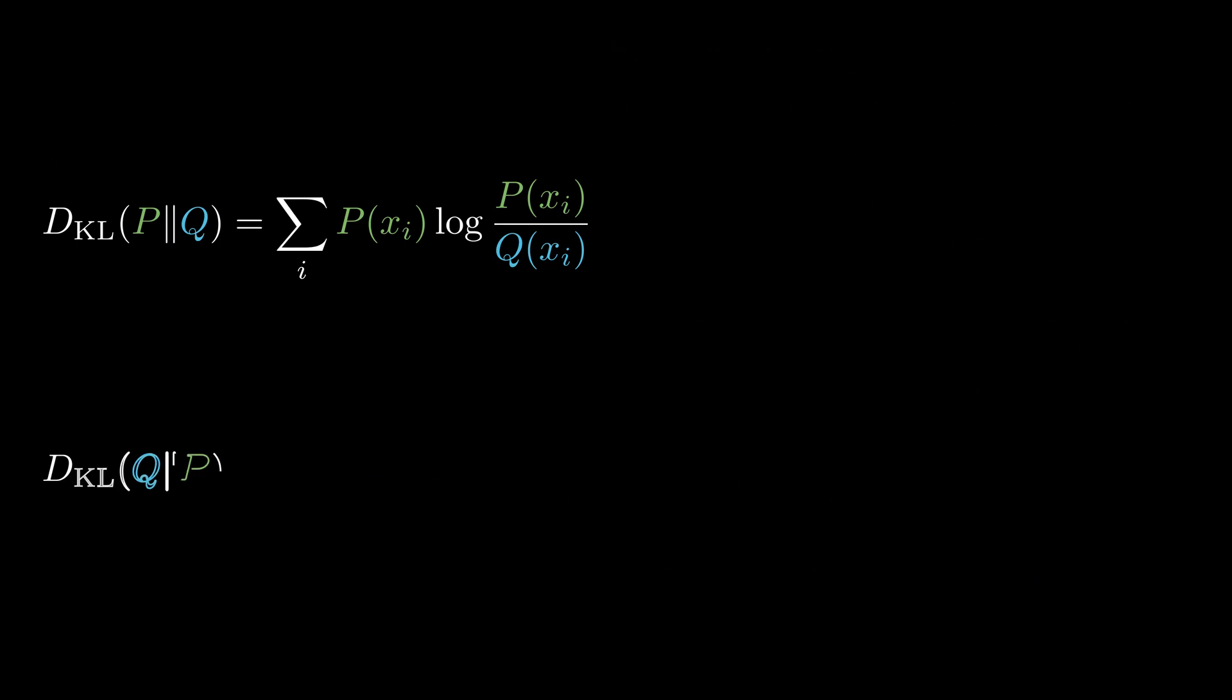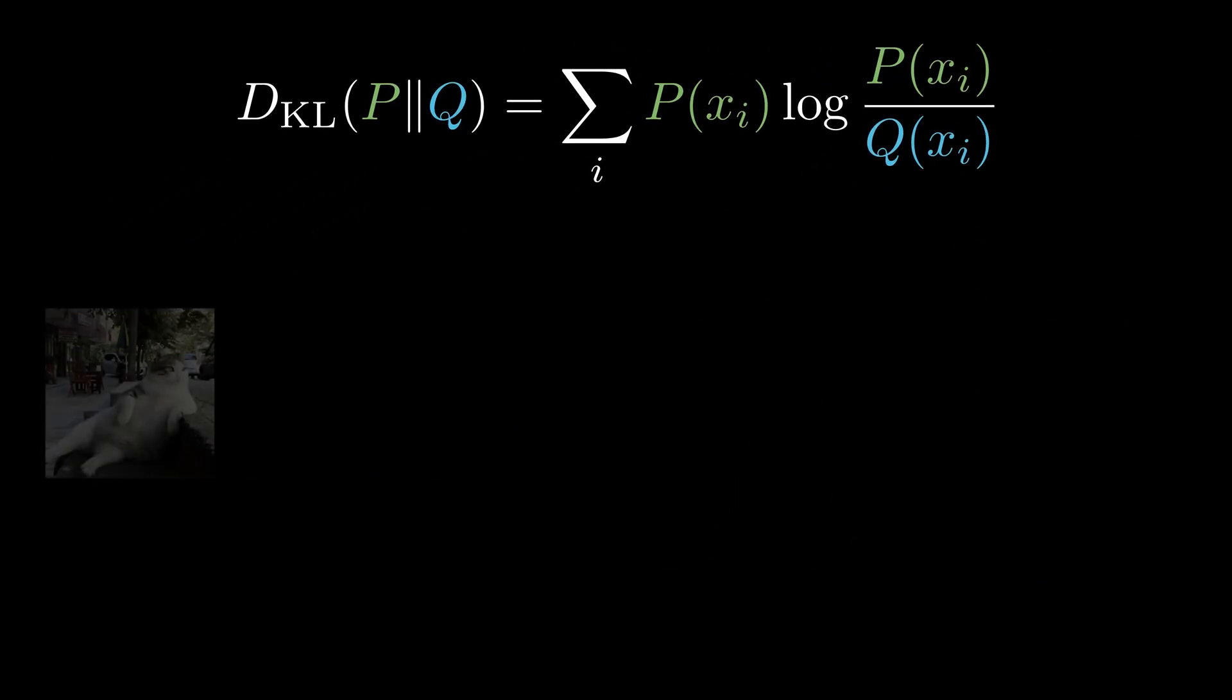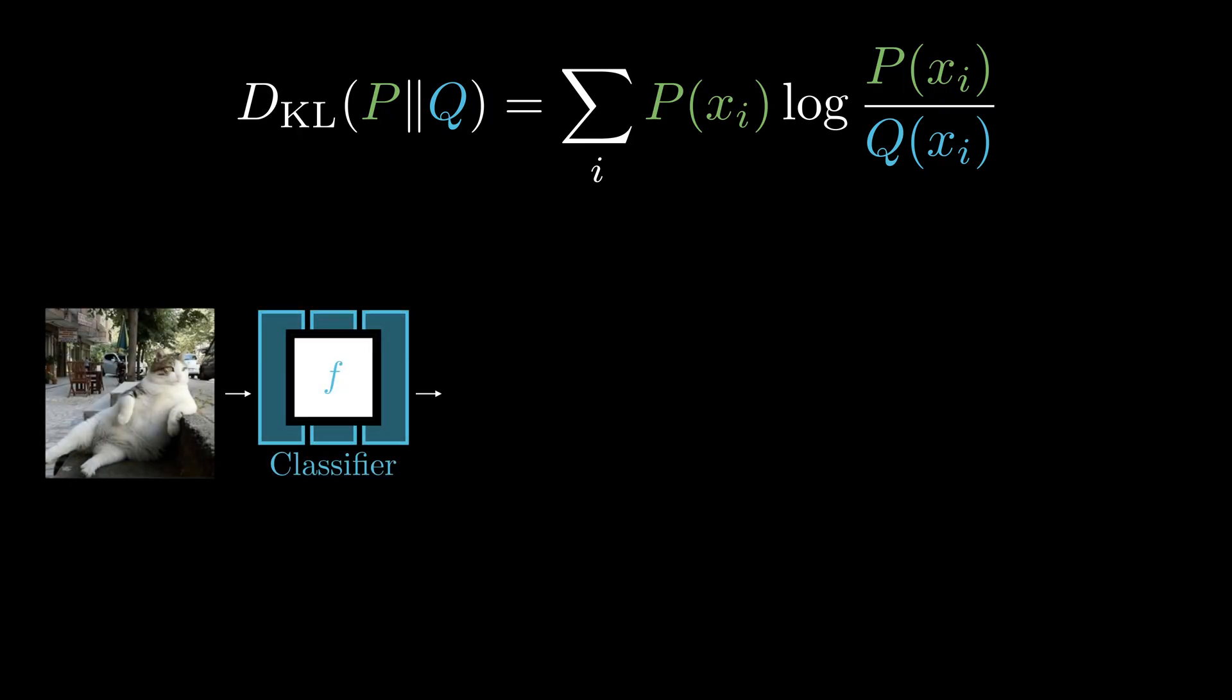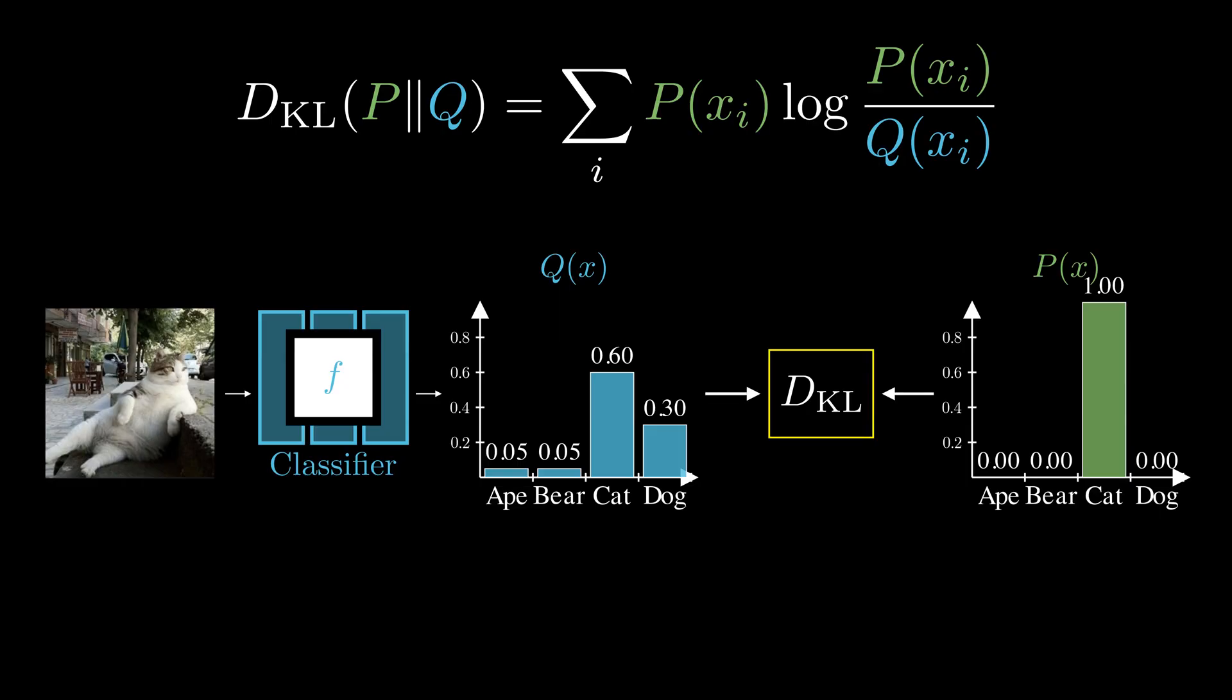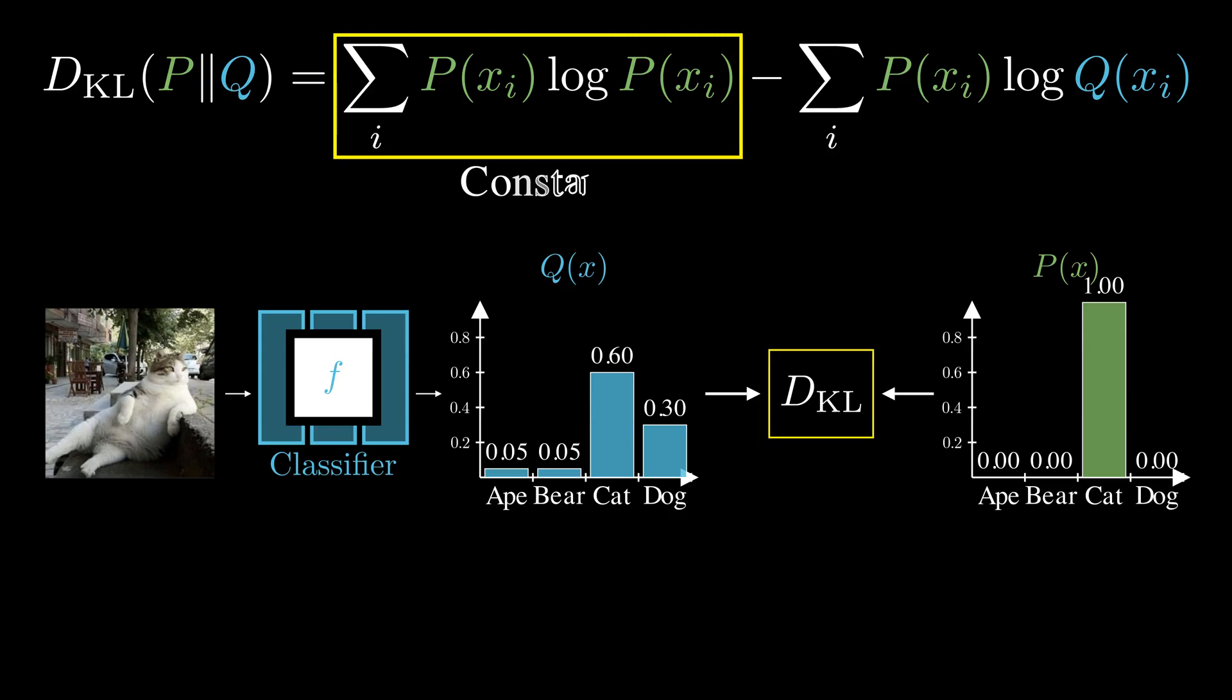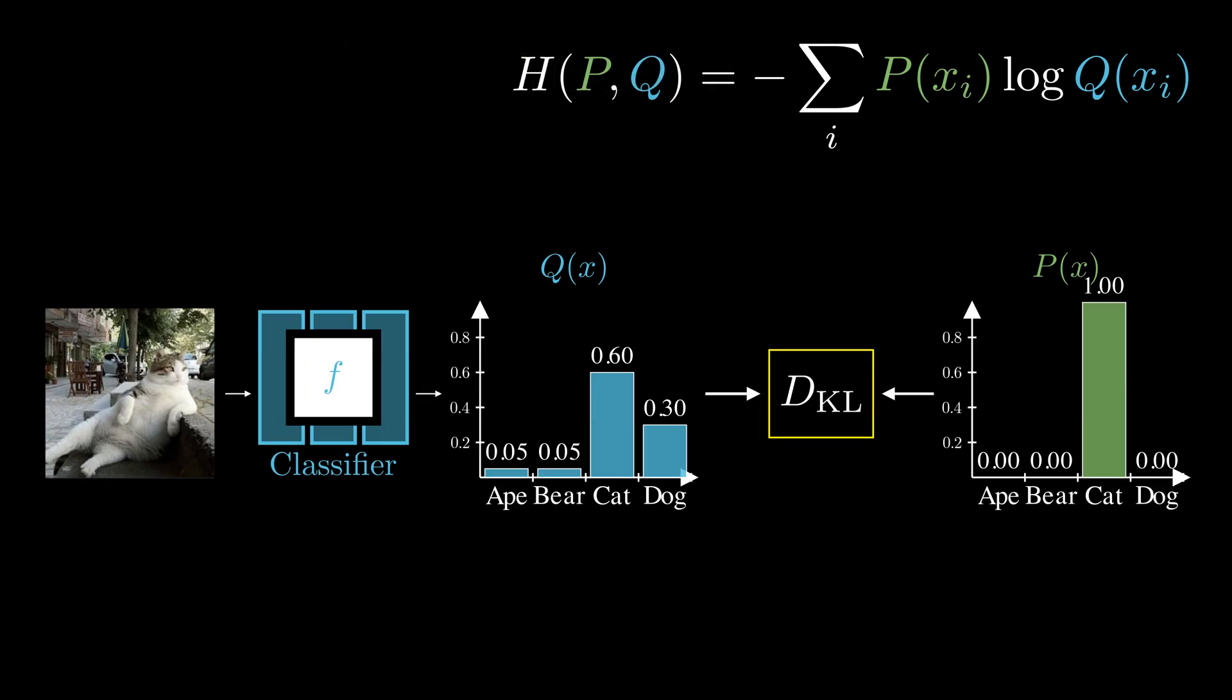Next, KL divergence appears everywhere in machine learning. In classification, we train models to predict a probability distribution over classes. We encode a true label as a one-hot distribution P, and the model predicts Q. With the two distributions, we use the KL divergence from P to Q as our loss. But if we look closely, this term is just a constant and does not depend on our model parameters. So in this case, minimizing the KL divergence is equivalent to minimizing cross-entropy loss, which is what you see in most training code.